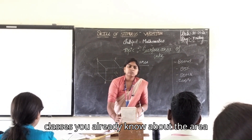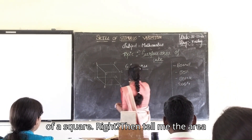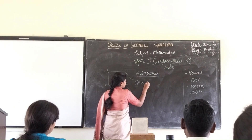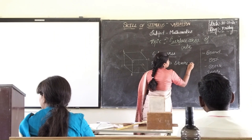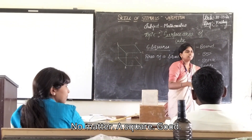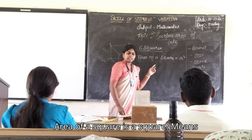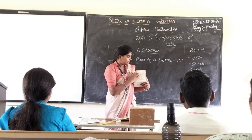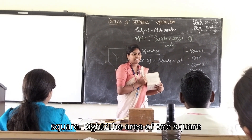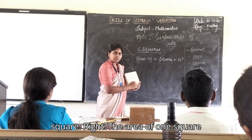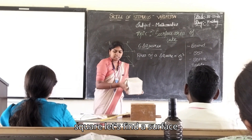By using this square, we will find the surface area. Firstly, in your earlier classes you already know about the area of a square, right? Tell me the area of a square. Area of a square is a squared. That means one face of a cube — one face of a cube is in the figure of a square, right? The area of one square is a squared.